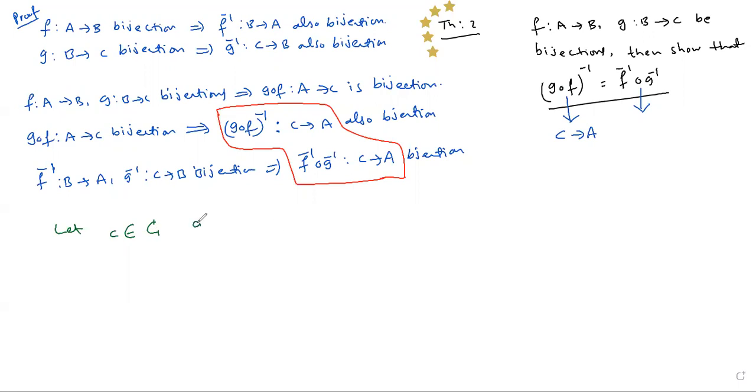This number G: B→C is bijection. By onto definition, for all C belongs to C, there exists B belongs to B such that G of B is equal to C.